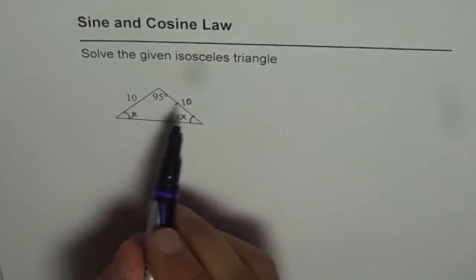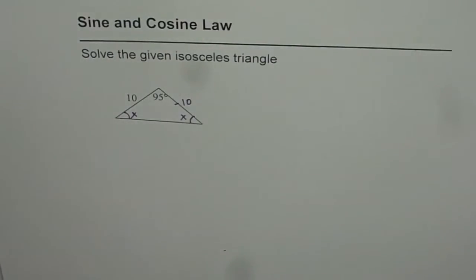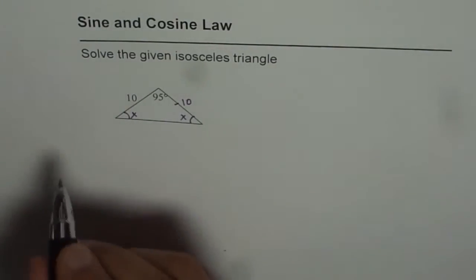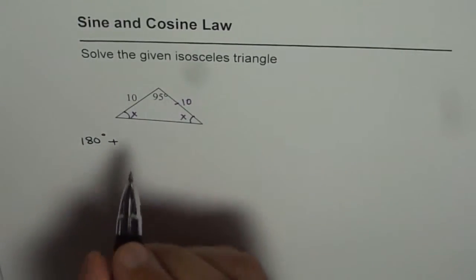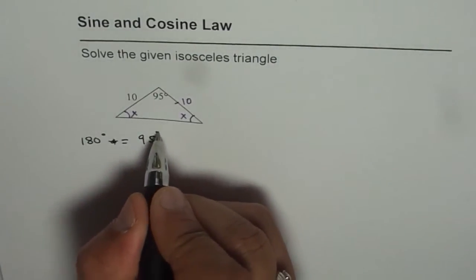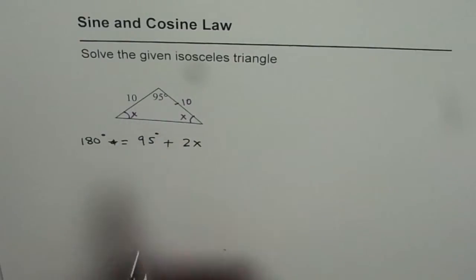So we know the side. Now, what should be the angle? Well, sum of angles is 180. So 180 degrees should be equal to 95 degrees plus 2x. Sum of these three angles should be equal to 180.